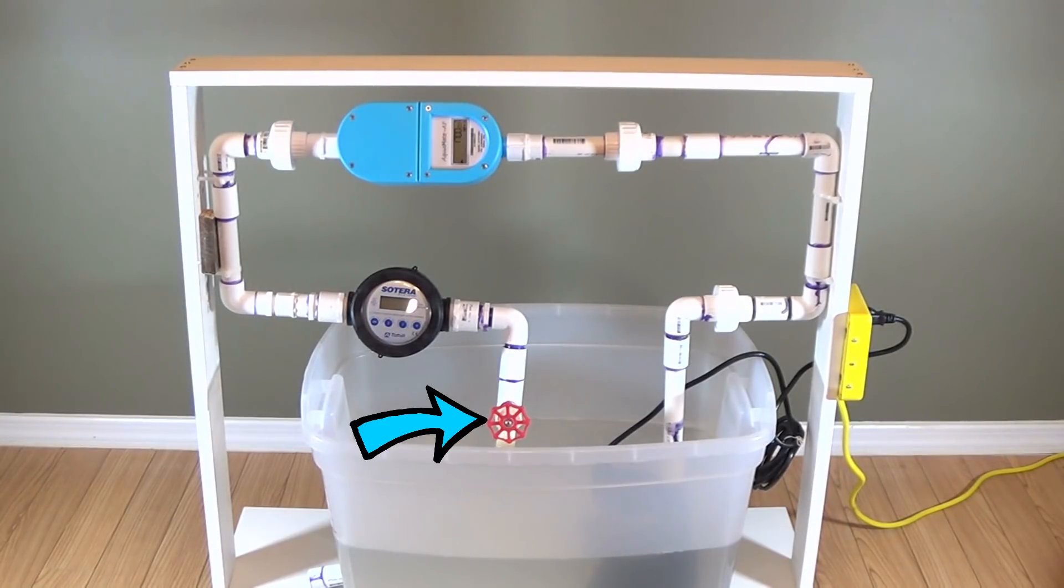A needle valve to control the water flow and the PVC pipes connecting all components to make a closed-loop water circuit in which the same water circulates from container through the meters and back to the container. And of course, the container is filled with regular tap water at room temperature.